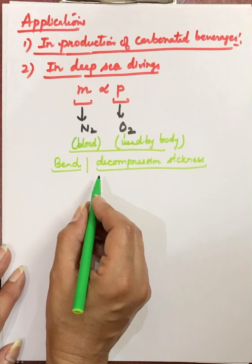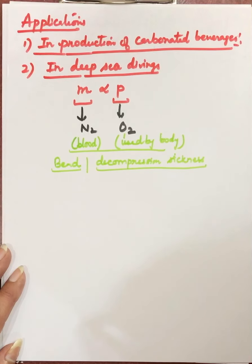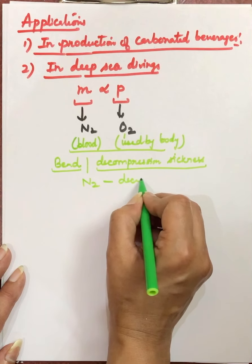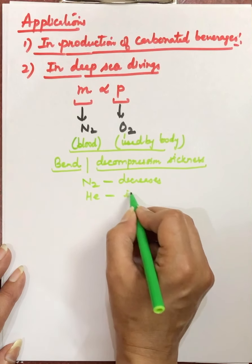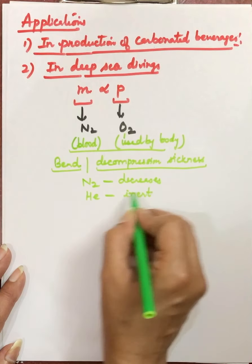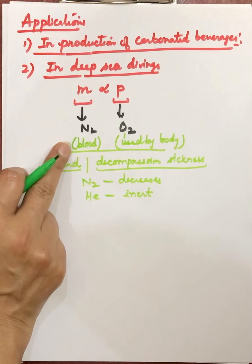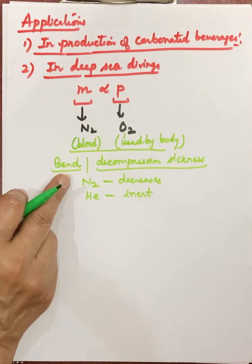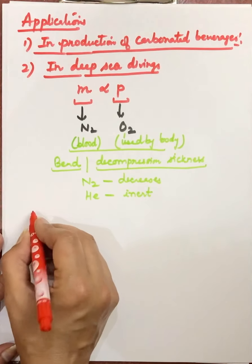To prevent decompression sickness, the oxygen cylinders that divers carry have reduced nitrogen content. Instead, inert helium is added, which is not very soluble in blood. So with less nitrogen dissolving in the blood, the diver faces much less of a problem when returning to the surface. This is how Henry's Law is applied in deep sea diving.